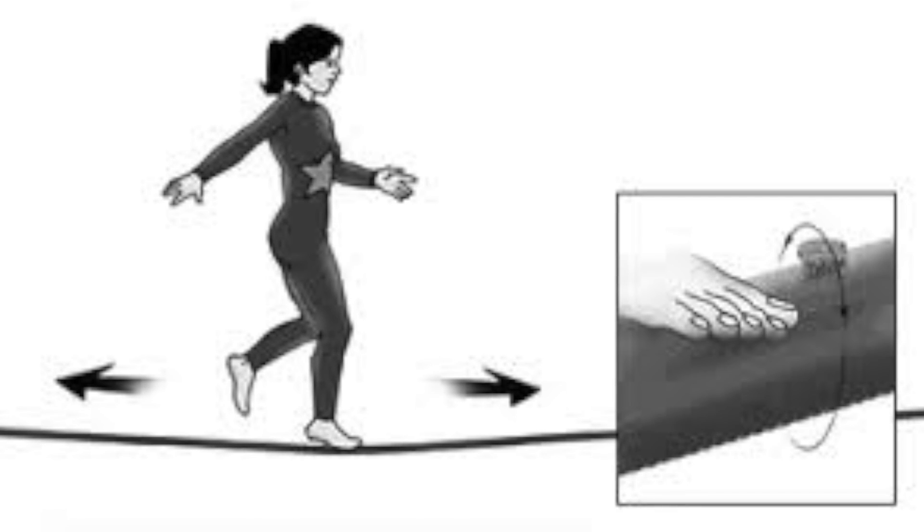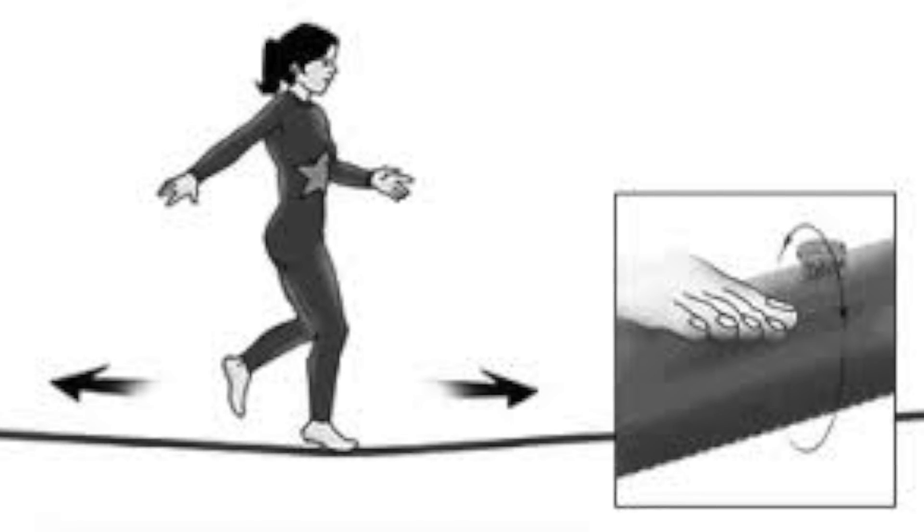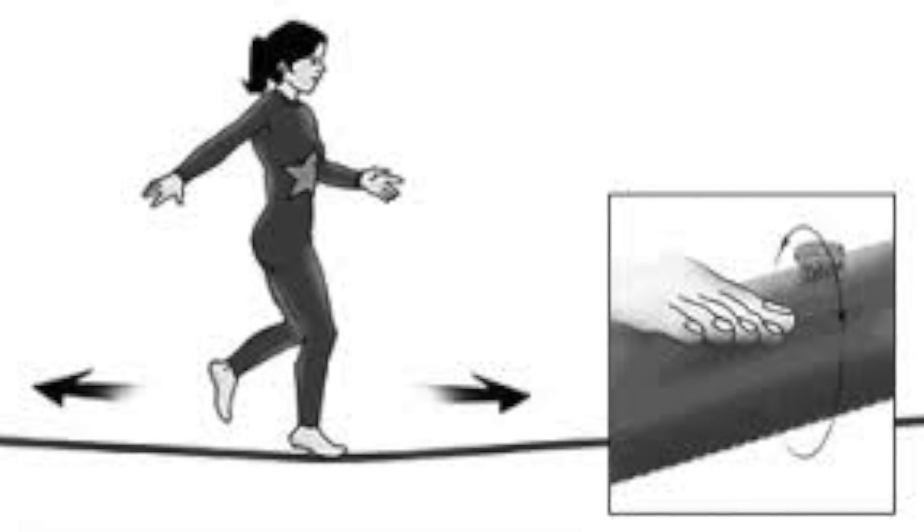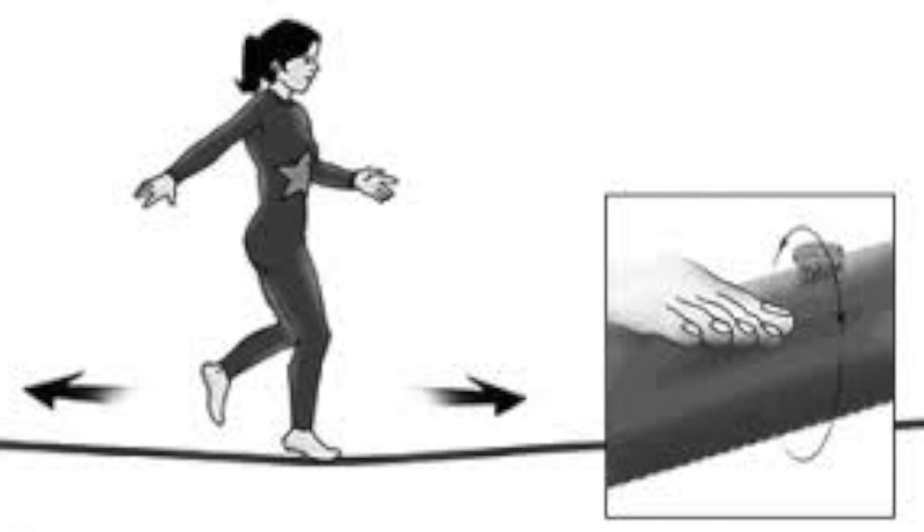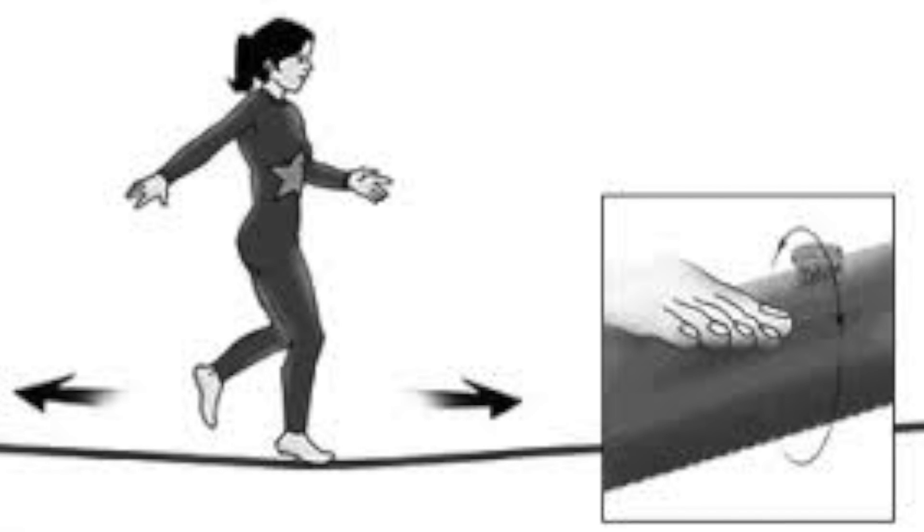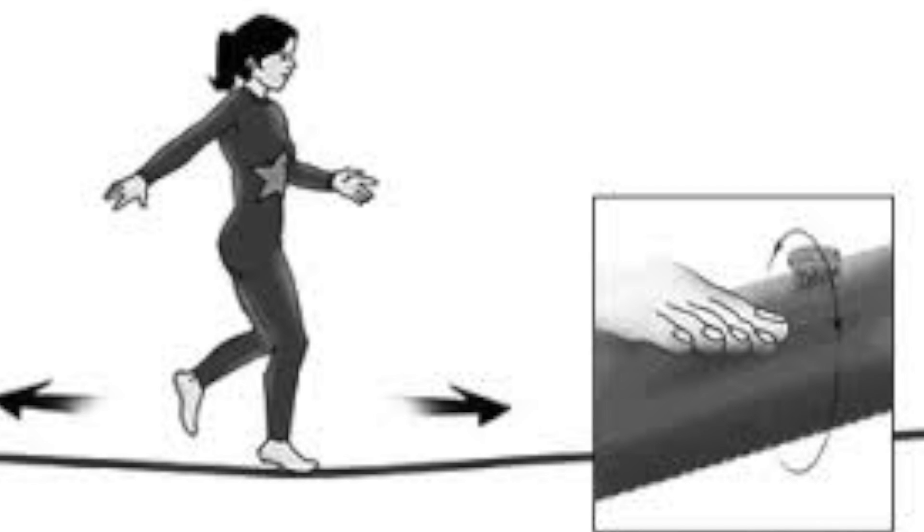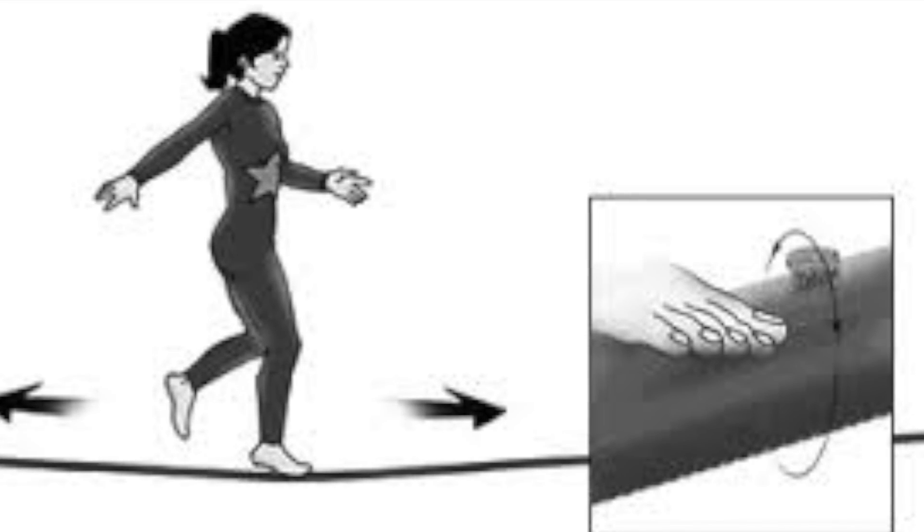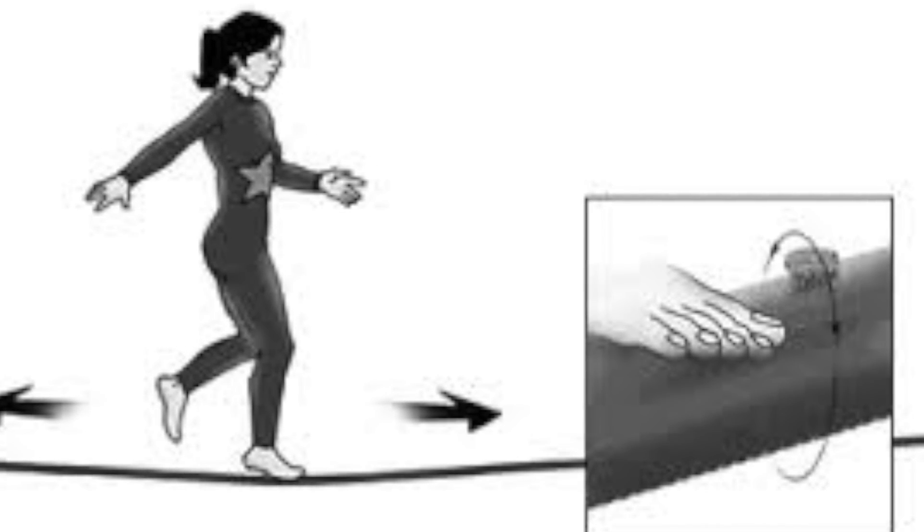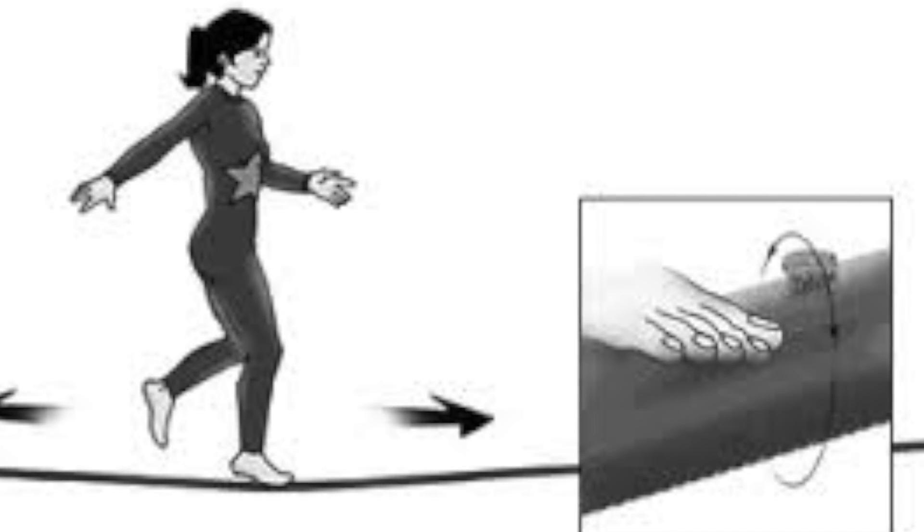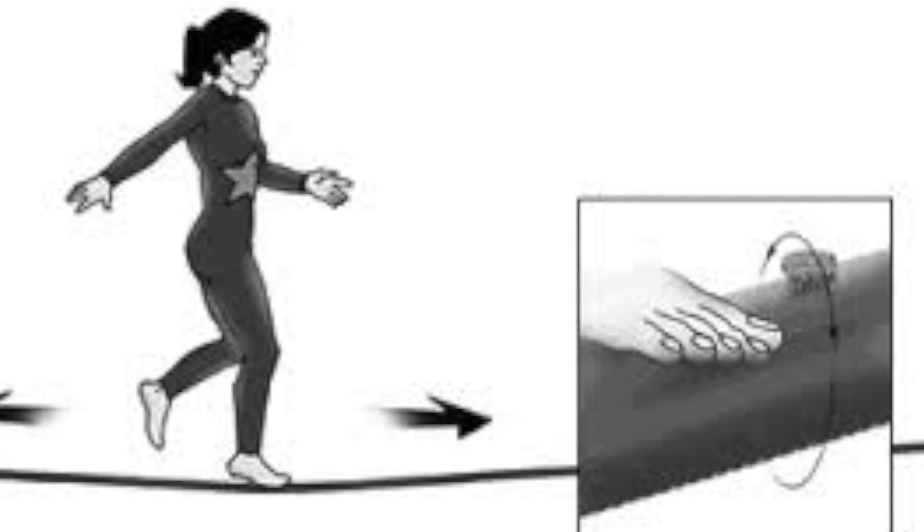One way of imagining an extra dimension is to think about a telephone wire. To us, we see it as a line, one dimensional, but to an ant, it can walk in the one dimension across or around the spiral patterns within the telephone wire. The ant, at its smaller level, perceives an extra dimension that we, unless we're looking closely at it, cannot see.